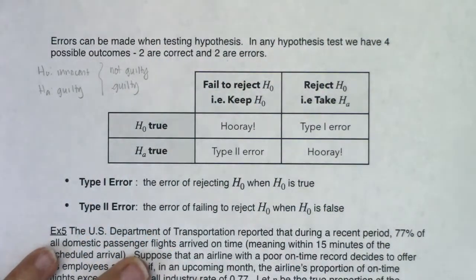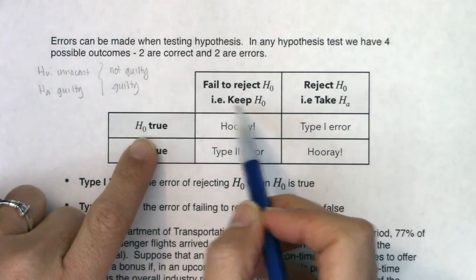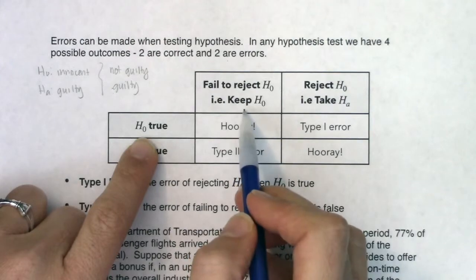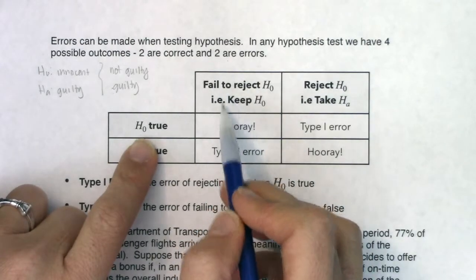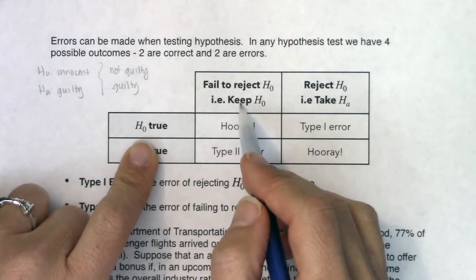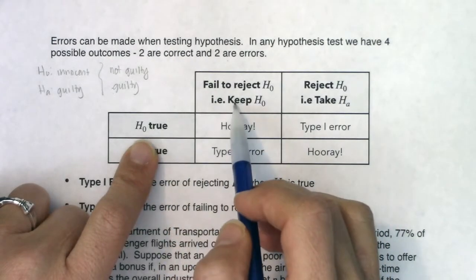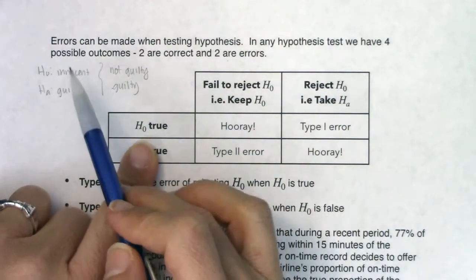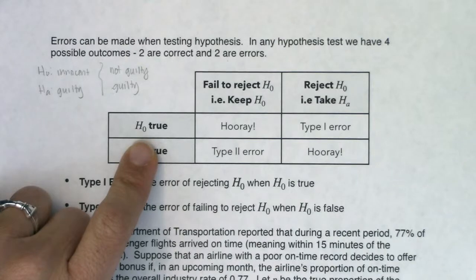Here's how we can keep track of this. As a stats teacher, we never actually say 'keep H naught' — we say 'fail to reject H naught.' We'll press on using the correct verbiage going forward. But for right now, if H naught is true and you keep it, that's a good thing. If an innocent person is found not guilty, that's great — we want people who are innocent to be found not guilty.